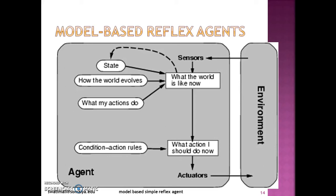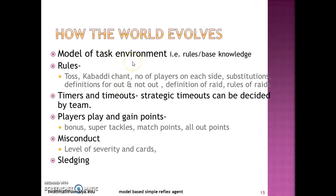Then comes the part wherein one has to understand how the world evolves. This is basically the rules-based knowledge base — the major part of the agent architecture that the designer has to deal with. The rules could be the toss rules, the Kabaddi chant which has to be there, the number of players on each side, the rules of substitutions, the definitions for being out and not out, the definition of the raid, and rules of the raid.